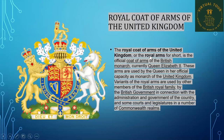The Royal Coat of Arms of the United Kingdom, or the Royal Arms for short, is the official coat of arms of the British monarch, currently Queen Elizabeth II. These arms are used by the Queen in her official capacity as monarch. Variants of the Royal Arms are used by other members of the British royal family, by the British government, and by some courts and legislatures in a number of Commonwealth realms.